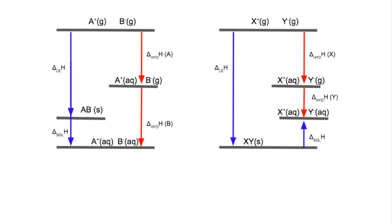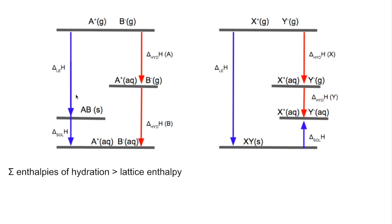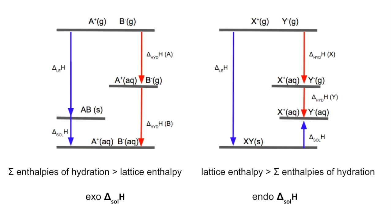Now we consider what makes an enthalpy change of solution exothermic or endothermic. If the sum of the hydration enthalpies is greater than the lattice enthalpy, the cycle must keep coming down to complete, giving an exothermic enthalpy change of solution. If the lattice enthalpy is greater than the sum of the hydration enthalpies, you get an endothermic enthalpy change of solution.